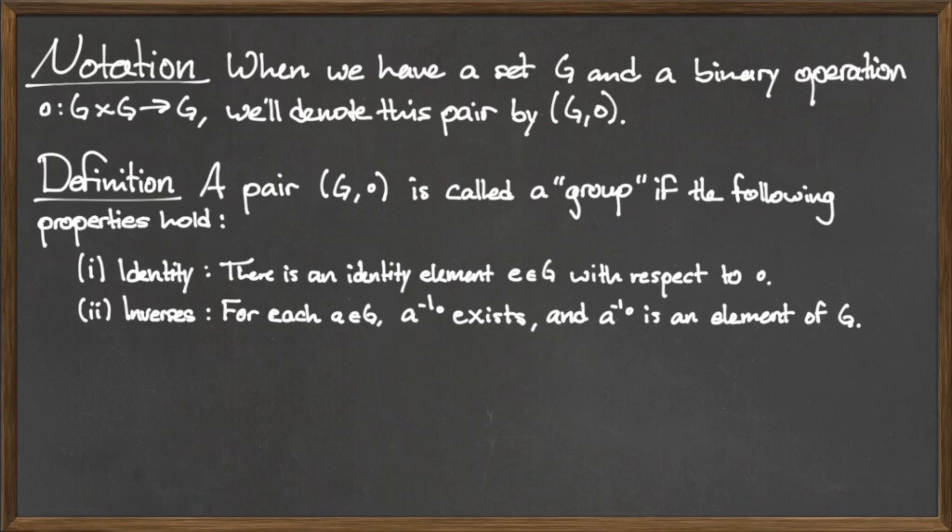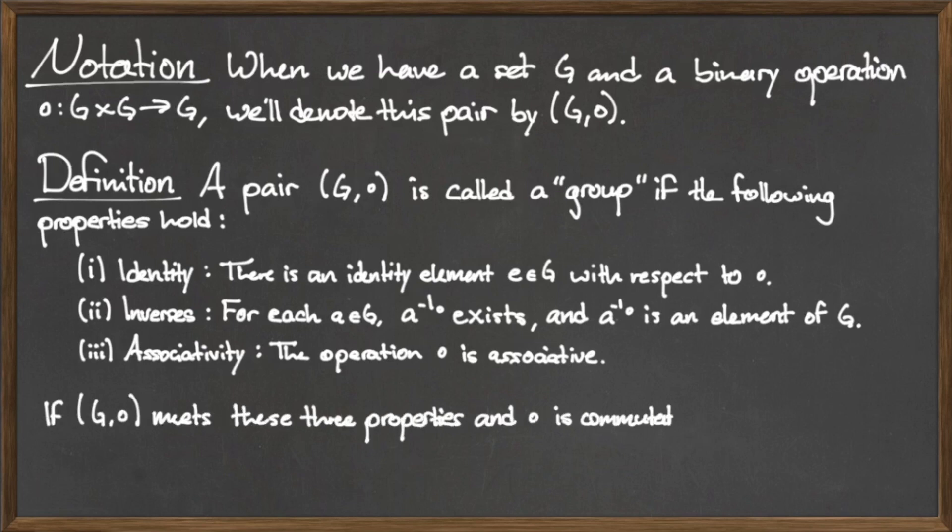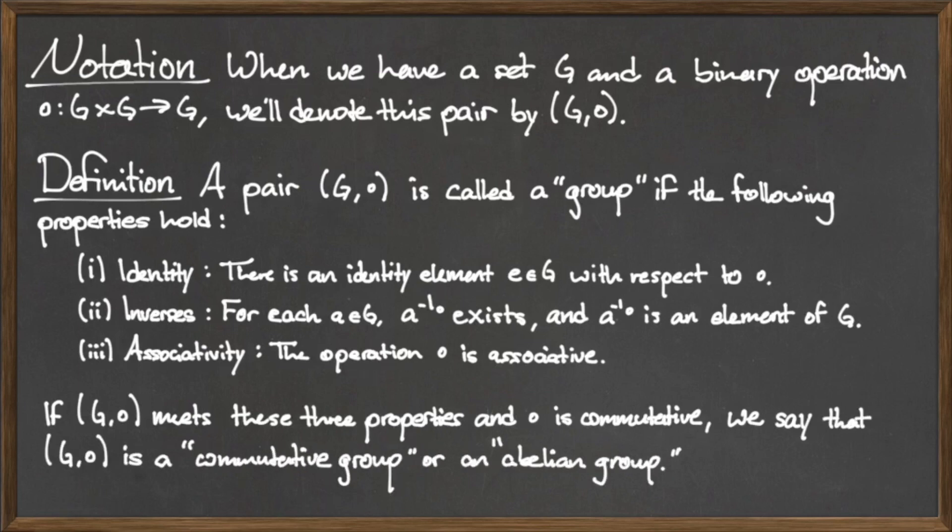The third property is the associativity property, which states that the binary operation dot must be associative. Any set and binary operation pair that satisfies these three requirements is known as a group.